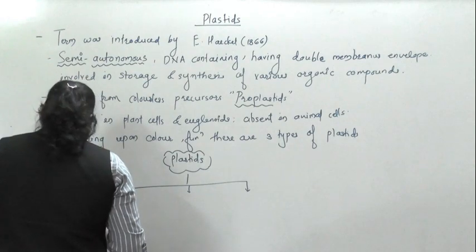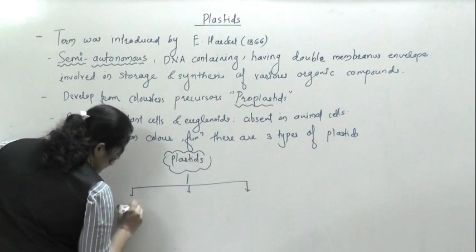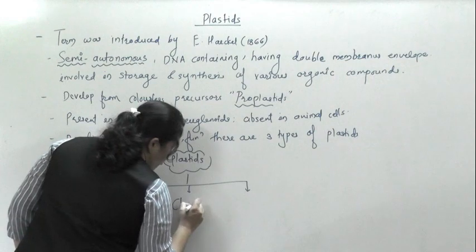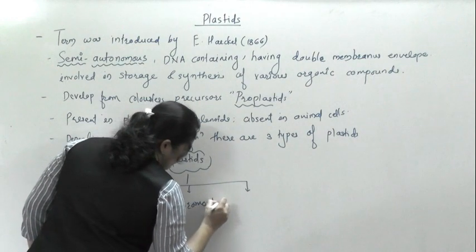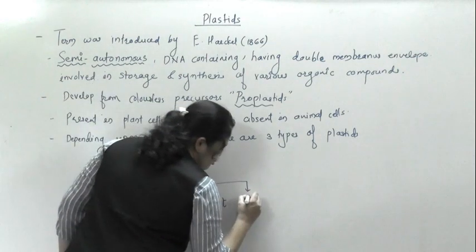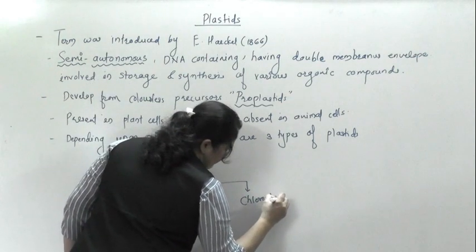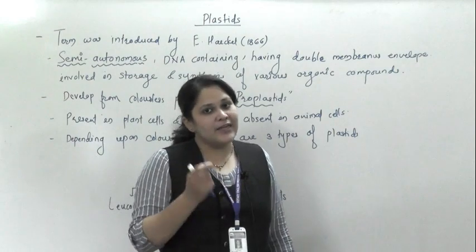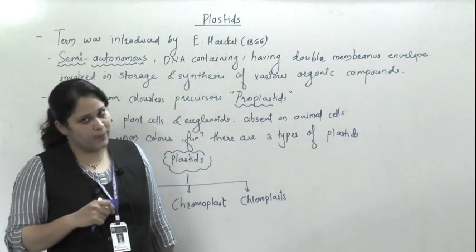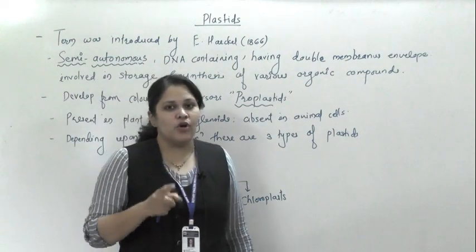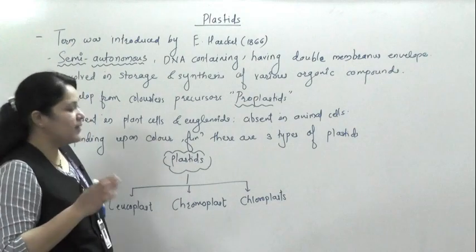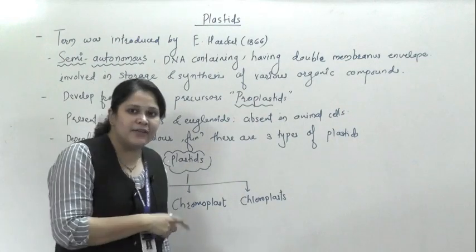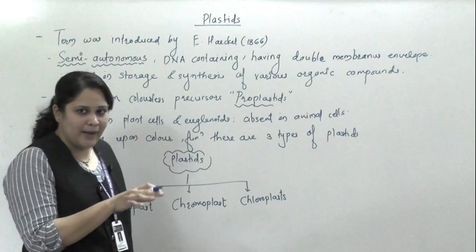There are three types of plastids based on color and function. The first type is leucoplast. The second type is chromoplast. And the third type is chloroplast. The color a plastid gets depends upon the number of pigments present in it. Depending upon color and the function they perform, plastids can be classified into these three types.